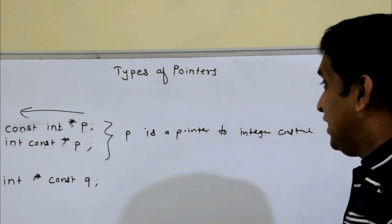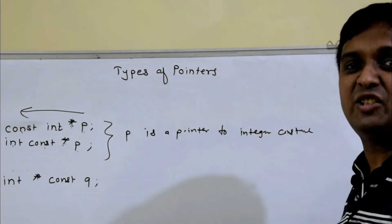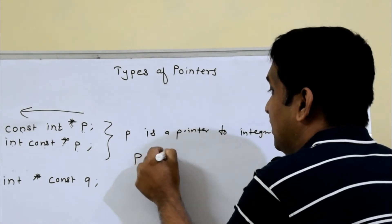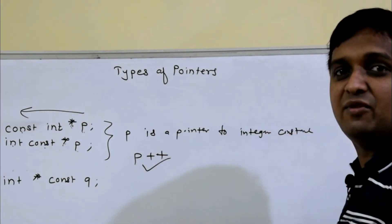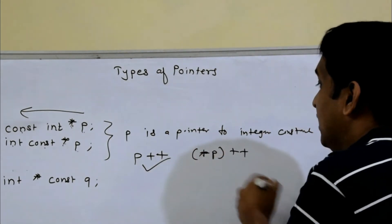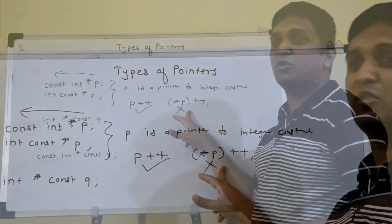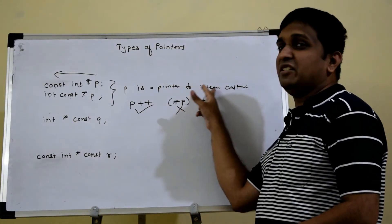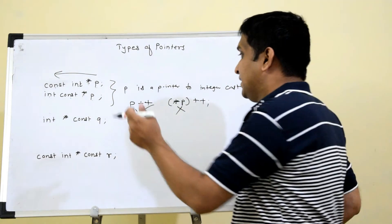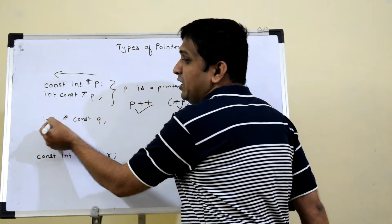That means p is a pointer — p itself is not constant, p is an ordinary pointer — but the variable to which it is pointing is constant. So if I declare p something like this, that statement will get compiled and is valid. But if I say asterisk p plus plus, this tries to change the value at that pointer, so this will throw an error because p is a pointer to integer constant.